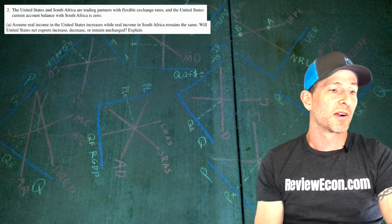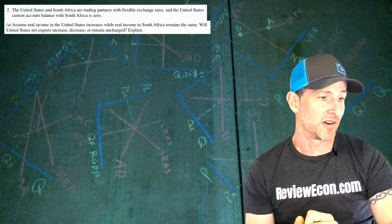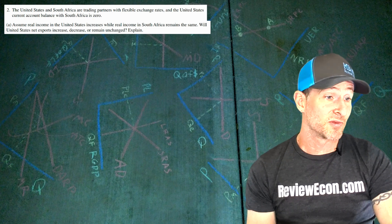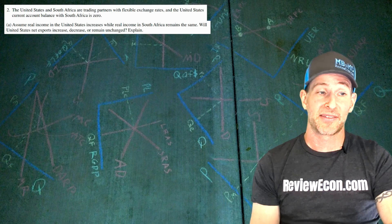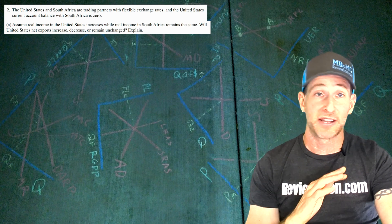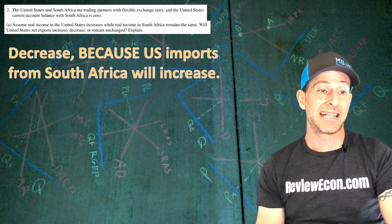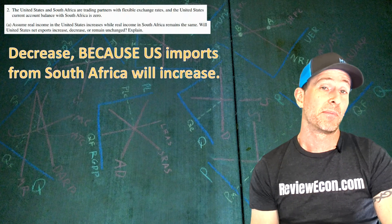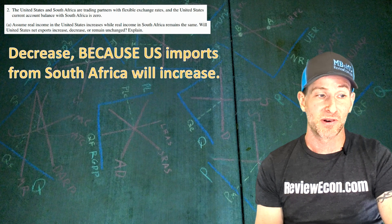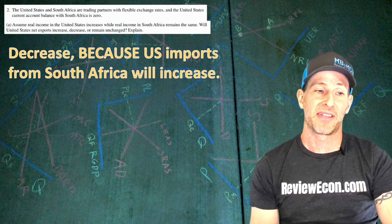Question 2: The United States and South Africa are trading partners with flexible exchange rates, both with a current account balance of zero. Assuming real income in the United States increases while South Africa's remains the same, US net exports will decrease. If the US has more national income, American citizens will buy more of everything including foreign-made goods, so imports from South Africa will increase, reducing net exports.